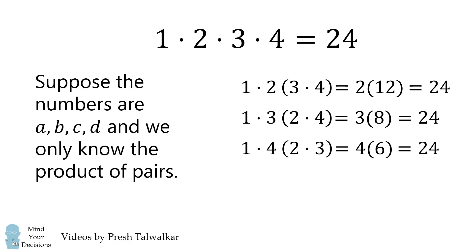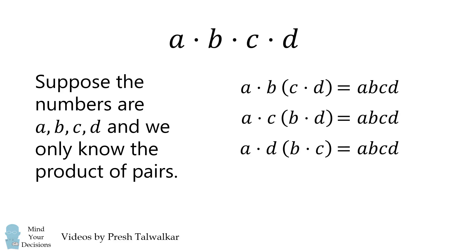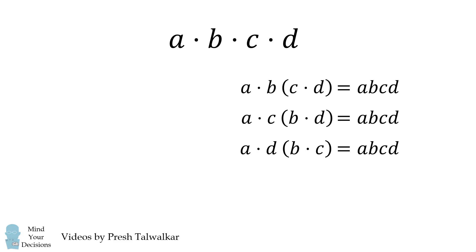So suppose the numbers are A, B, C, D and we only know the product of the pairs. So we have 4 unknown numbers, but we can still make the product ABCD in three different ways. That's the key insight.